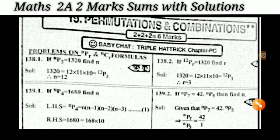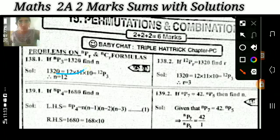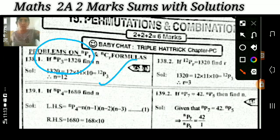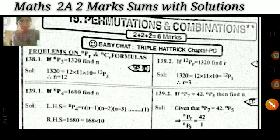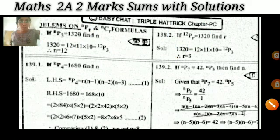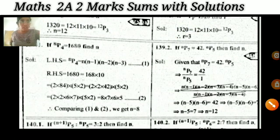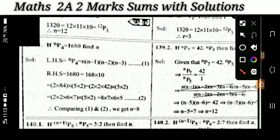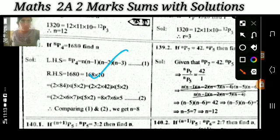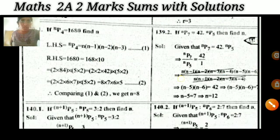The first problem: if nP3 = 1320, then what is the value of n? Very very important. Same model: if nP4 = 1680, then what is the value of n? Also very important. Next: if nP7 = 42 × nP5, then what is the value of n? Most important question.